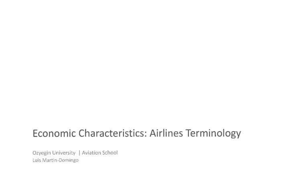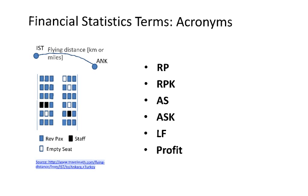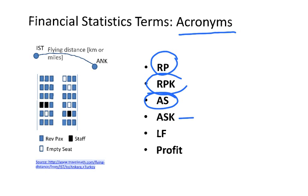Within the economic characteristics of airlines, there is certain terminology mainly used in this business. Let me explain in this short video. In the airline business you will often see these acronyms: RP, RPK, AS, ASK, LF, and PROFIT. Let me explain these with one example.